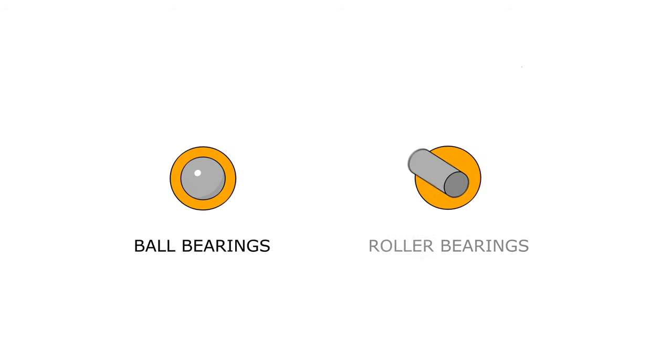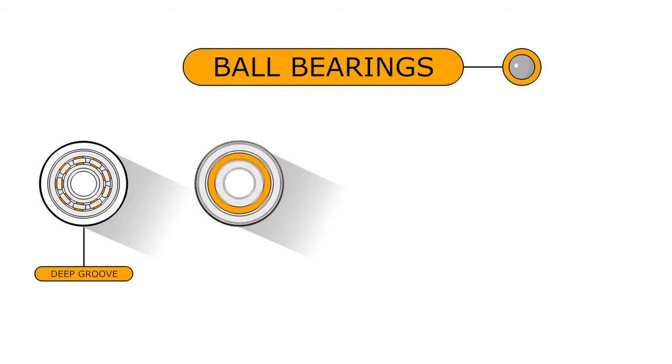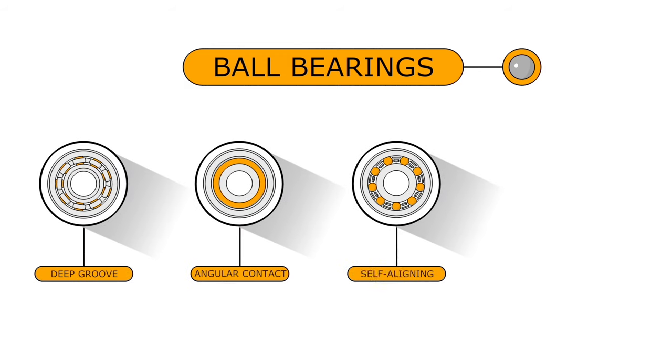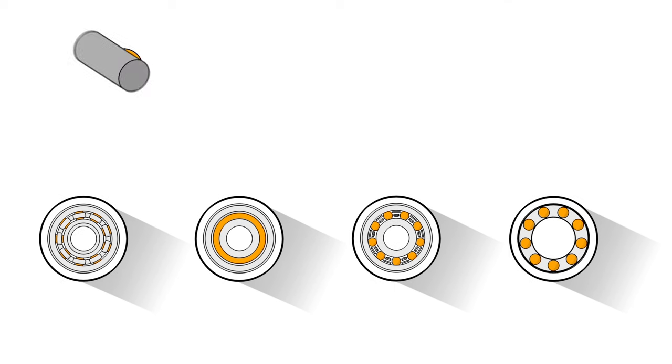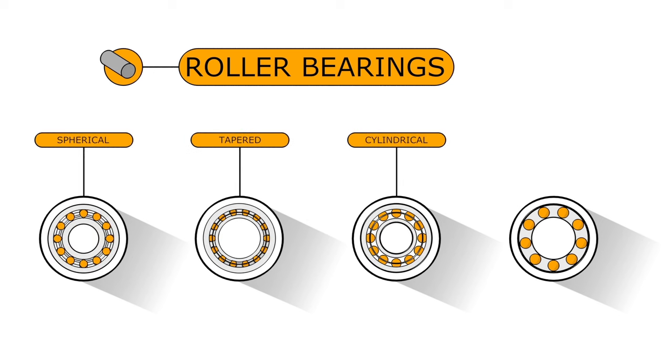There are two main types of bearings: ball and roller bearings. Ball bearings, such as deep groove ball bearings, angular contact ball bearings, self-aligning ball bearings and thrust ball bearings. And roller bearings, such as spherical roller bearings, taper roller bearings, cylindrical roller bearings and needle roller bearings.